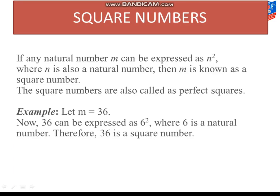Now, what are square numbers? If any natural number m can be expressed as n², where n is also a natural number, then m is known as a square number. This is actually the perfect definition of square number. The square numbers are also called as perfect squares. For example, let m equals 36. Now, 36 can be expressed as 6². 36 is a square. You all know that 36 is square of 6, means 6 into 6 is 36, where 6 is also a natural number. Therefore, 36 is a square number. We call 36 a perfect square.